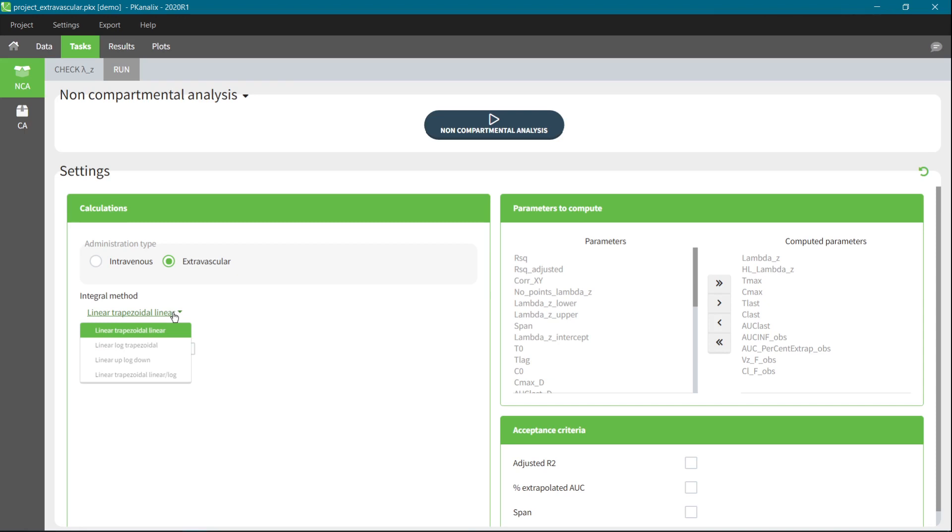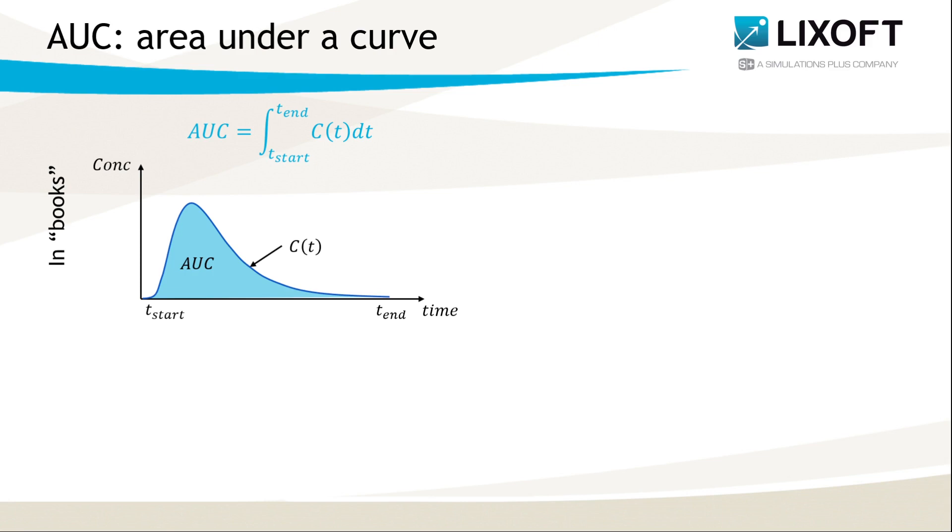In this video, I will explain in detail the options that are available here in the drop-down curve. So let's start from the basics. The area under the concentration profile is a definite integral of a drug concentration curve over time, which is here denoted by C. Definite means that it is calculated between two well-defined time points, here t-star and t-end.